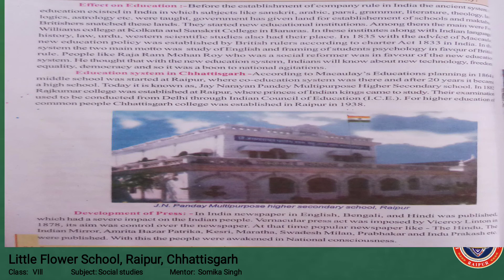A college for common people was also established in Raipur in 1938. Regarding the development of press in India, newspapers in English, Bengali and Hindi were published, which had a severe impact on the Indian people. The Vernacular Press Act was imposed by Viceroy Lytton in 1878 and its main aim was to control over newspapers. Newspapers like The Hindu, The Indian Mirror, Amrita Bazar Patrika, Kesari, Mahratta, Swadesh, Milan, Prabhakar and Hindu Prakash were published, which awakened people with national consciousness.